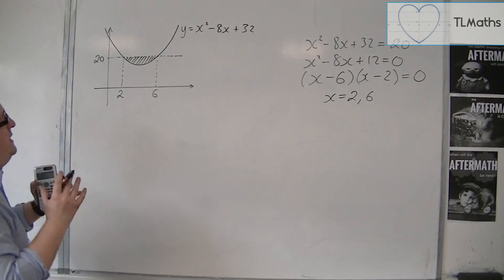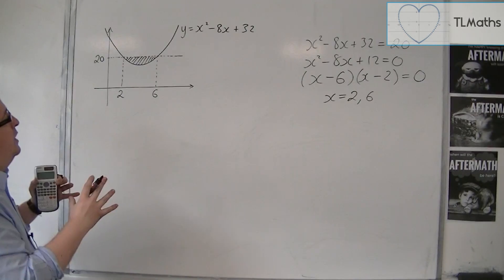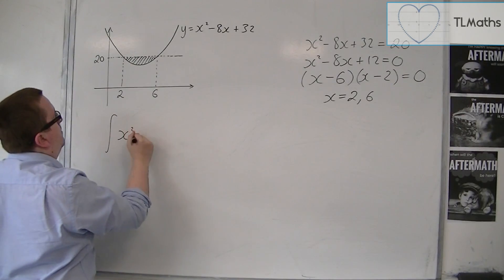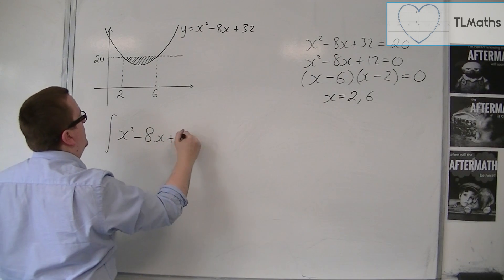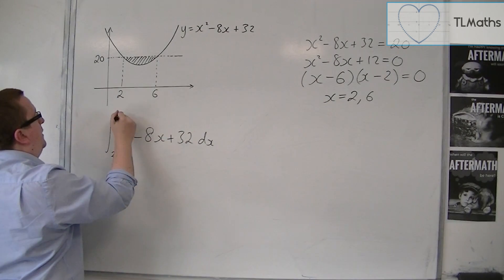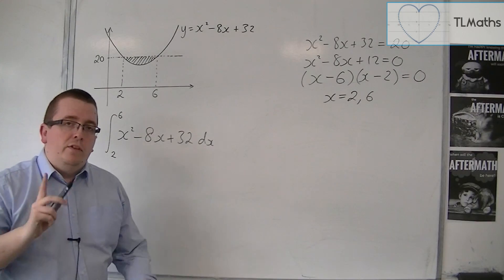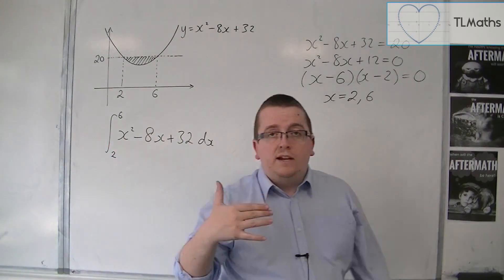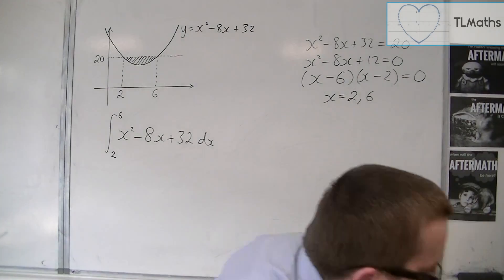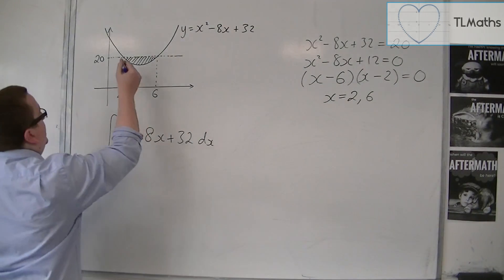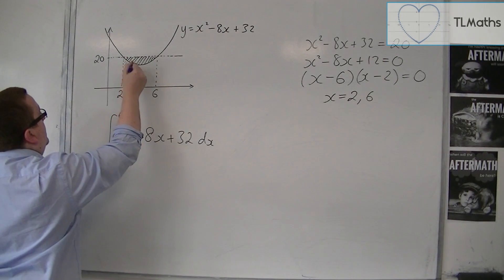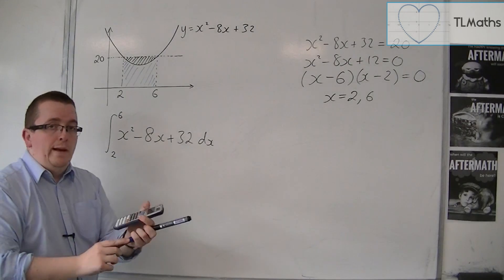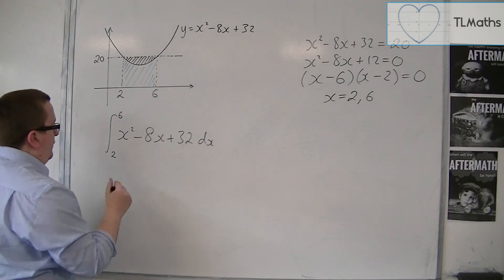So we now have a start on where we can go with this because we could integrate x squared minus 8x plus 32 between 2 and 6. But remember that that gives us the area between the curve and the x axis. So that will actually give us this area here. Not the area that we're actually looking for, but it will give us that blue area. So let's do that.